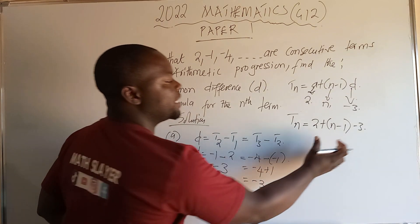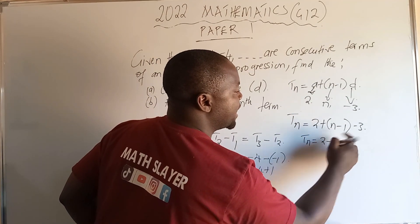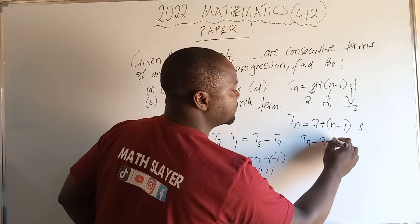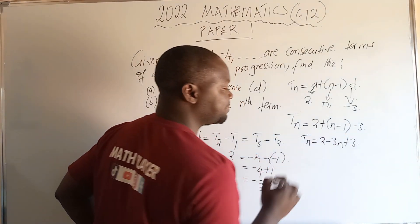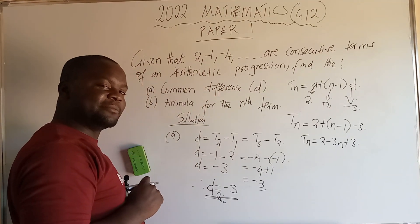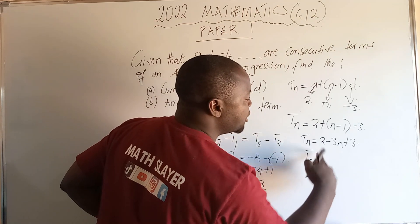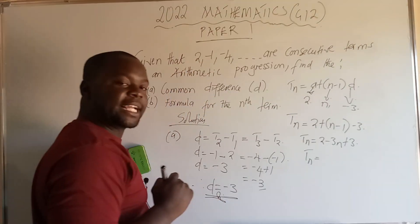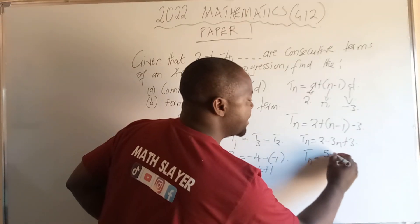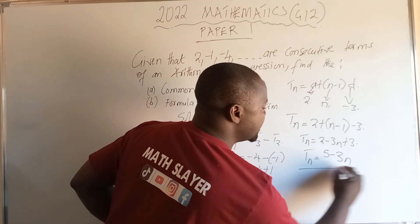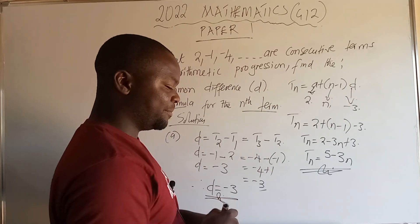From there, let's expand this part. We get: nth term equals 2 minus three n plus three — since negative three times negative one is positive three. Collecting like terms: two plus three gives five, so the nth term equals five minus three n. This is the formula for the nth term.